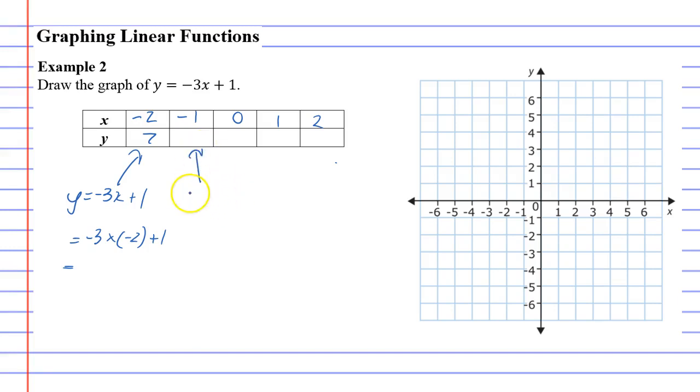Okay, now let's go to the next column. This time it's y equals negative 3 times negative 1 plus 1, since x is negative 1 this time, and this will give us 4. And then we're going to go negative 3 times 0 plus 1, which is 1.